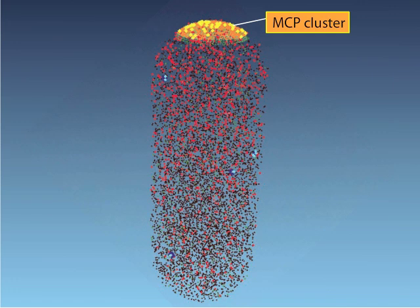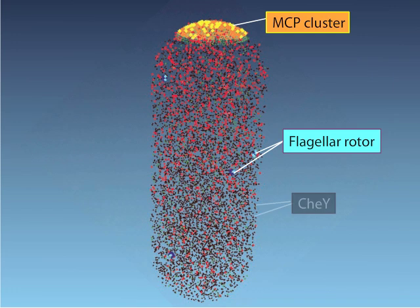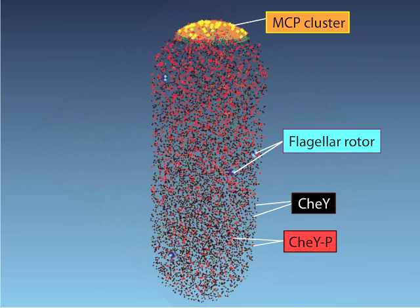A cluster at one pole is depicted here. Flagellar rotors are shown as blue and purple. CheY proteins are shown as black dots, while the phosphorylated versions of CheY are red. A high rate of tumbling depends on a high concentration of phosphorylated CheY.